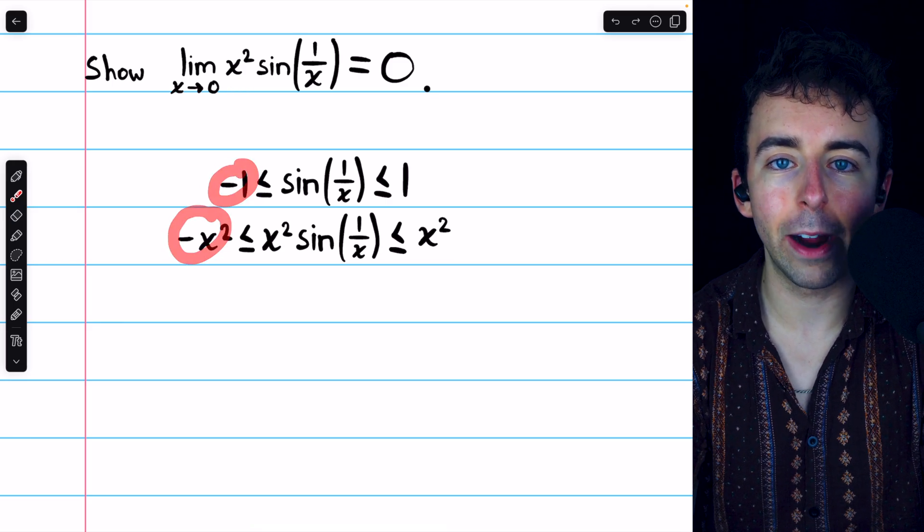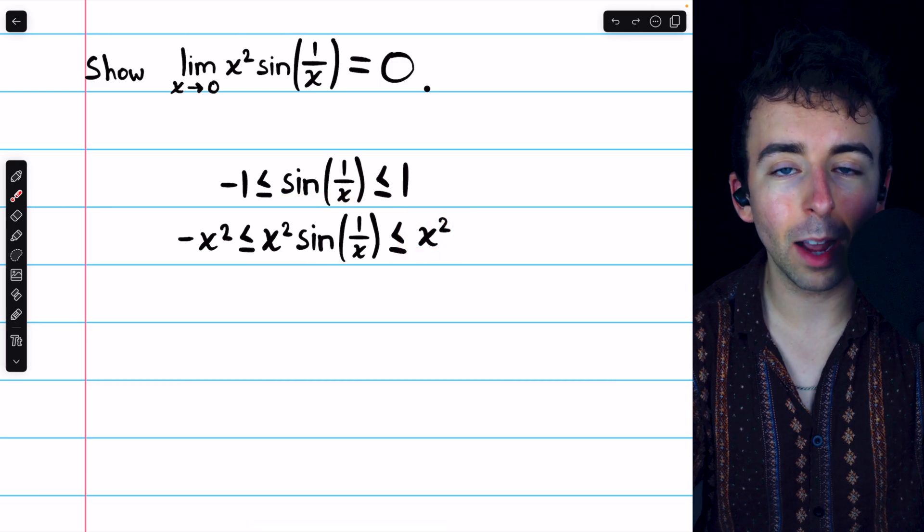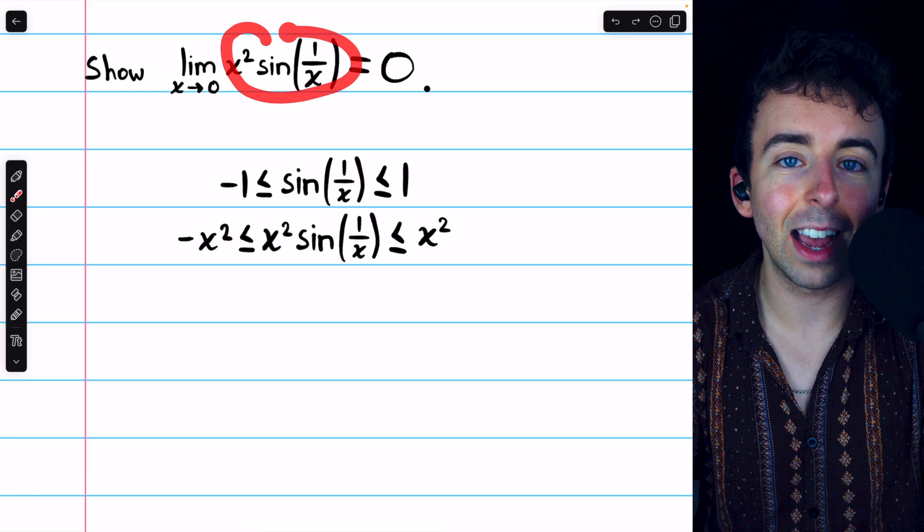Then, on the left, we have negative x squared, on the right, we have positive x squared, and in the middle, we have x squared times sine of 1 over x, just as desired.